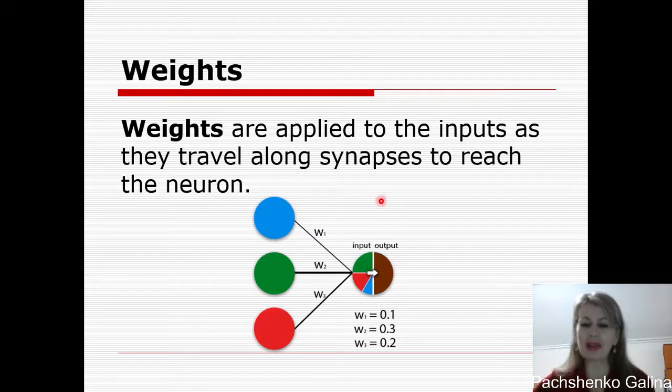For example here we see three inputs and three weights. And I remind you that we take values for weights from the range from 0 to 1. And here we can see values for w1 equal to 0.1, w2 equal to 0.3 and w3 equal to 0.2.